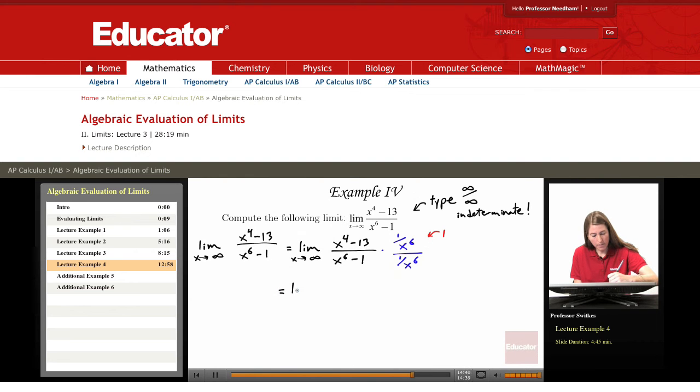So we have the limit as x heads towards infinity, and now I'm going to distribute the 1 over x to the sixth to the two terms in the numerator, and similarly in the denominator. And so, x to the fourth over x to the sixth is 1 over x squared, and then we have a minus 13 over x to the sixth. In the denominator, x to the sixth over x to the sixth is 1, and then we have a minus 1 over x to the sixth.